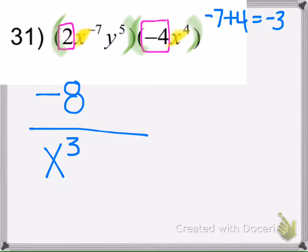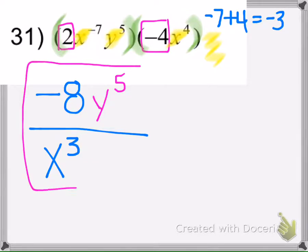Then we have the y right here, but the y doesn't have another y over here, so the y to the fifth will stay put, and that is our final answer.